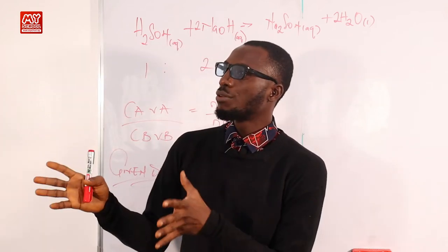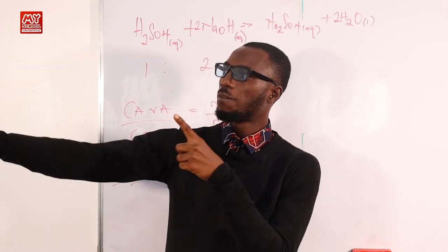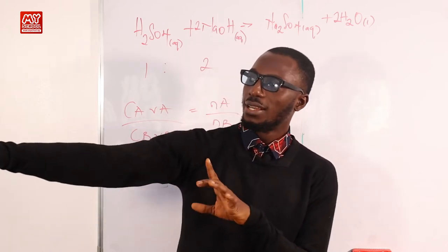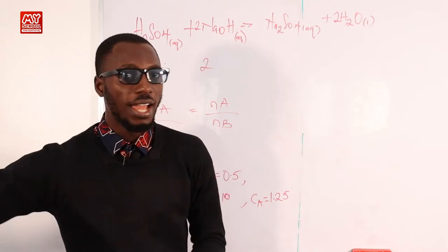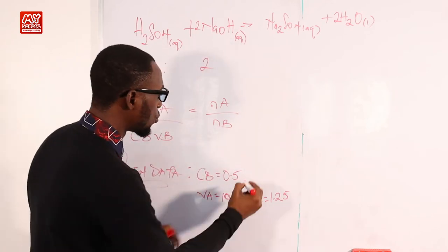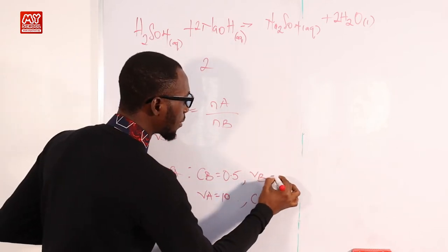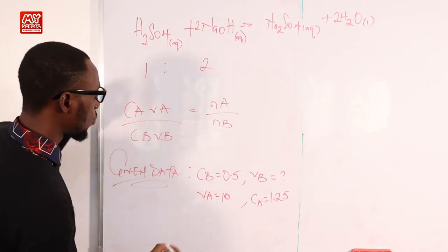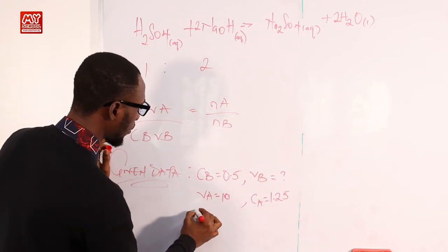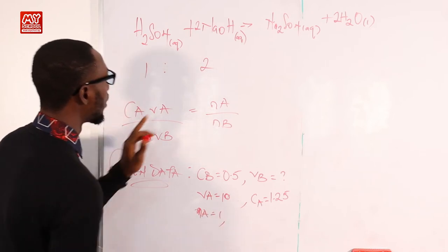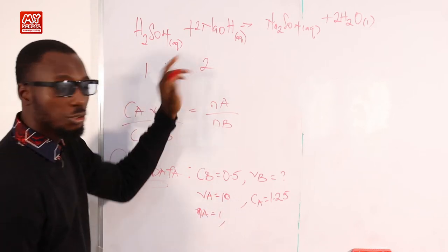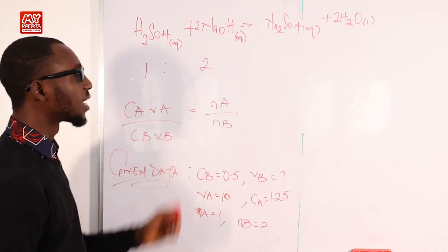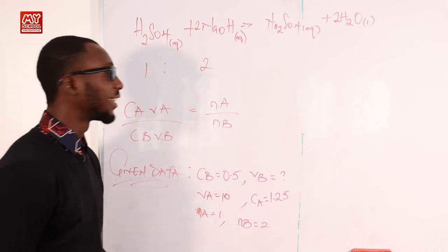We are asked to find the volume of sodium hydroxide that will neutralize 10 cm³ of the acid. The unknown is VB (volume of the base). The number of moles of acid NA = 1, and number of moles of base NB = 2. With this, we can slot in our values and get our answer.